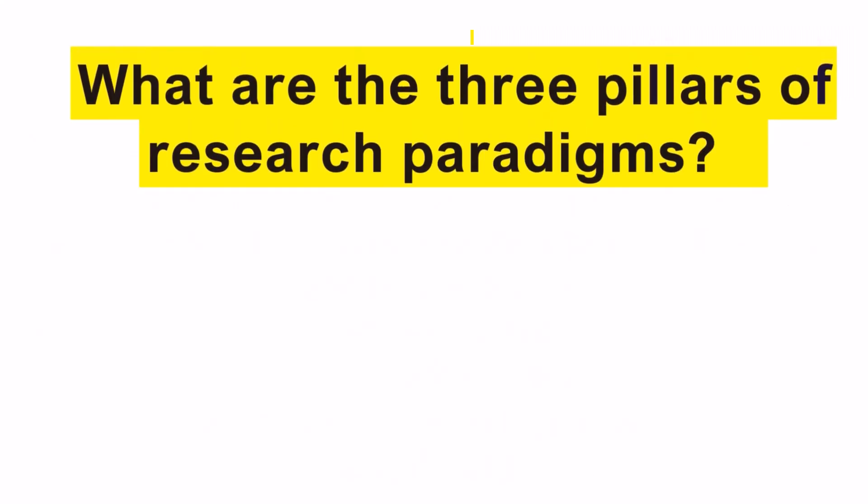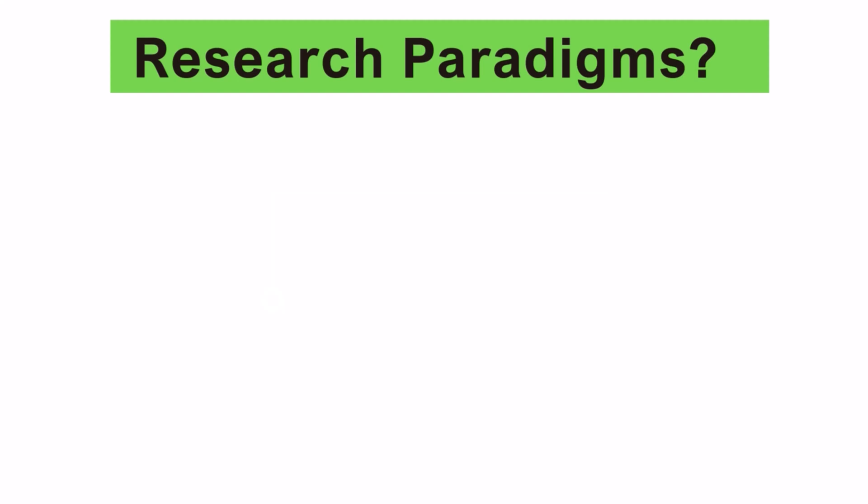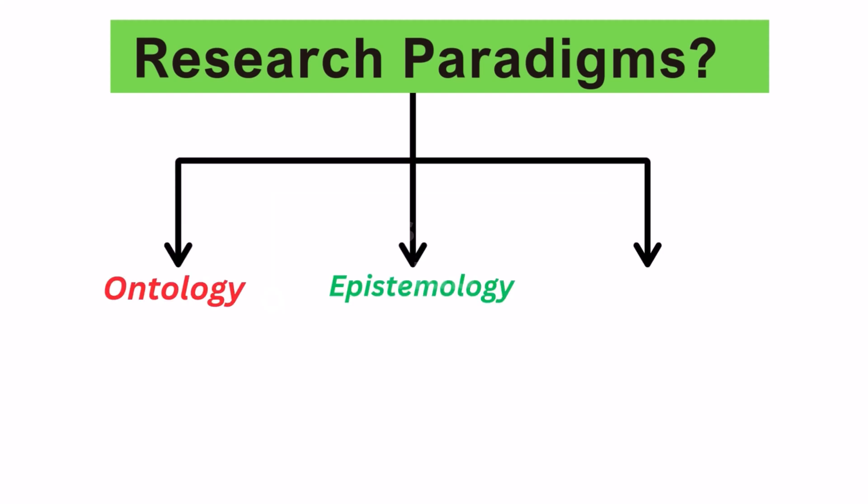What are the three pillars of research paradigms? Now you may be asking, what makes up a research paradigm? How are they formed and categorized? The research paradigm framework is supported by three pillars: ontology, epistemology, and methodology.